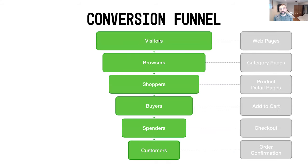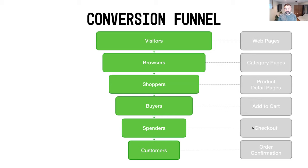We started off where we had visitors at the top end of your funnel. Those visitors convert and go through looking at specific pages on your website. When they show interest in products — whether they visit a category page or search results page — they become a browser. Those browsers, as they show interest in product detail pages, become shoppers. Those shoppers, when they're ready to add something to their cart, become a buyer. And when those buyers are ready to put down their credit card, they go through checkout and hopefully reach the order confirmation step and become a customer.